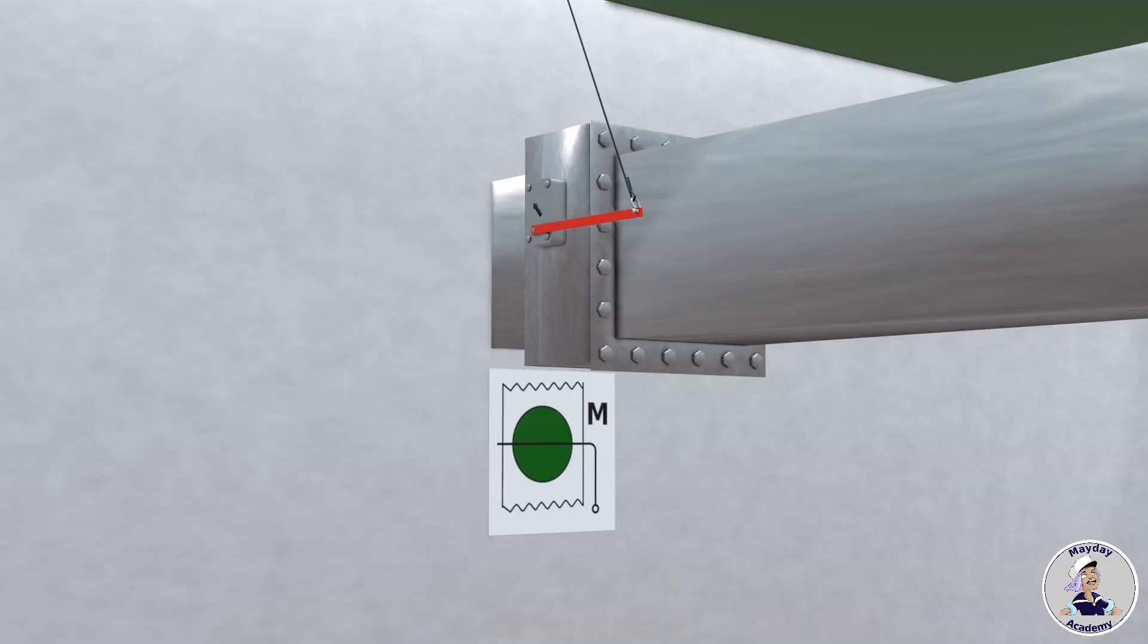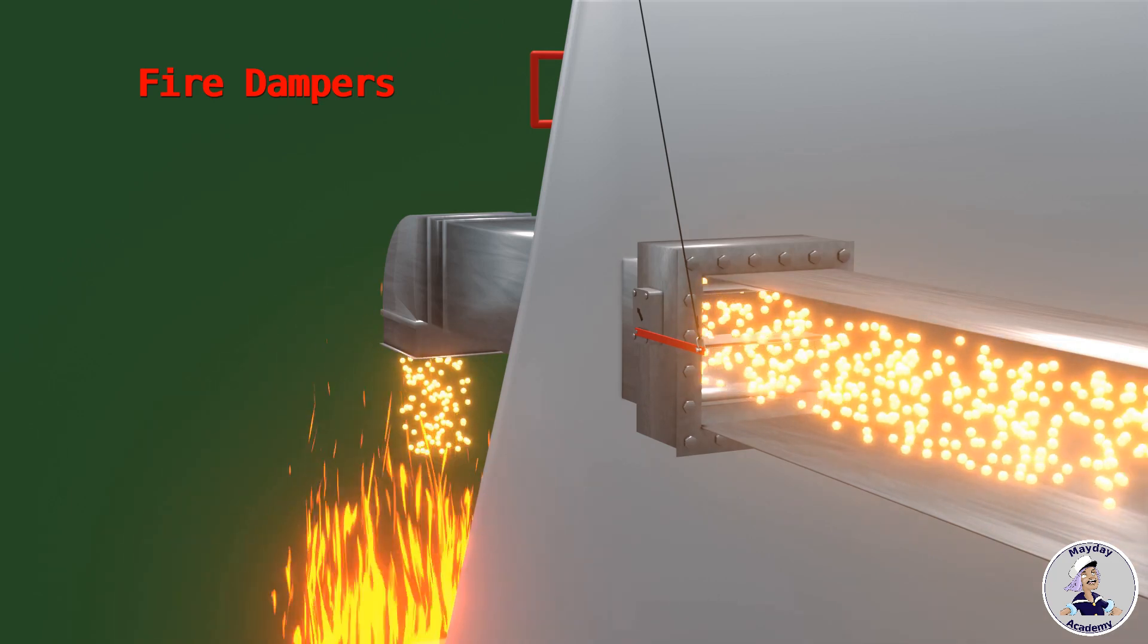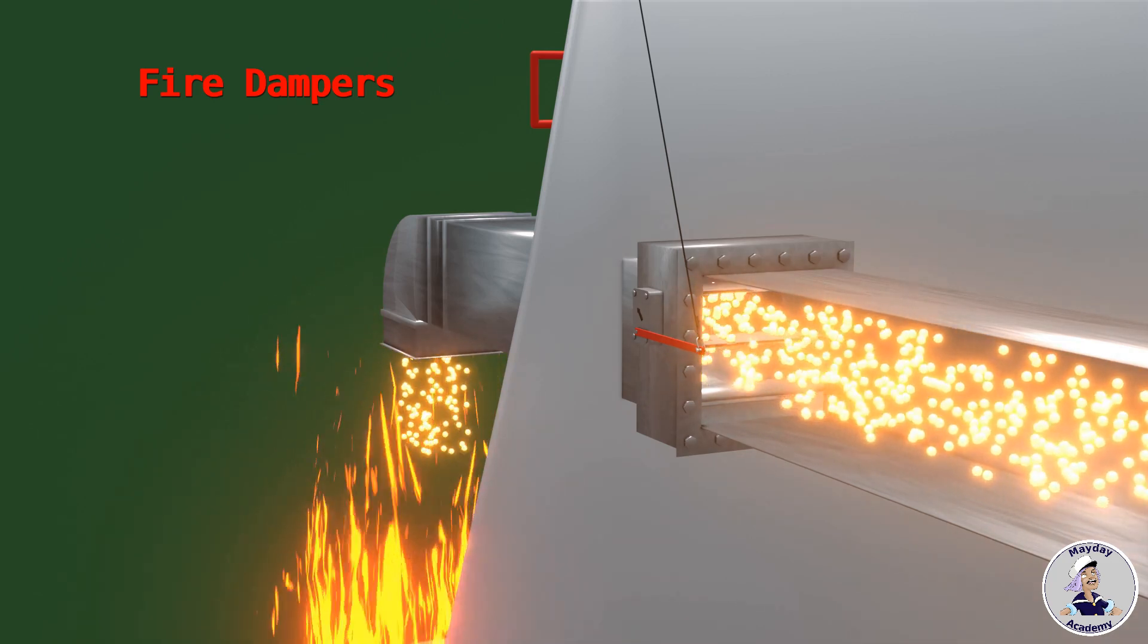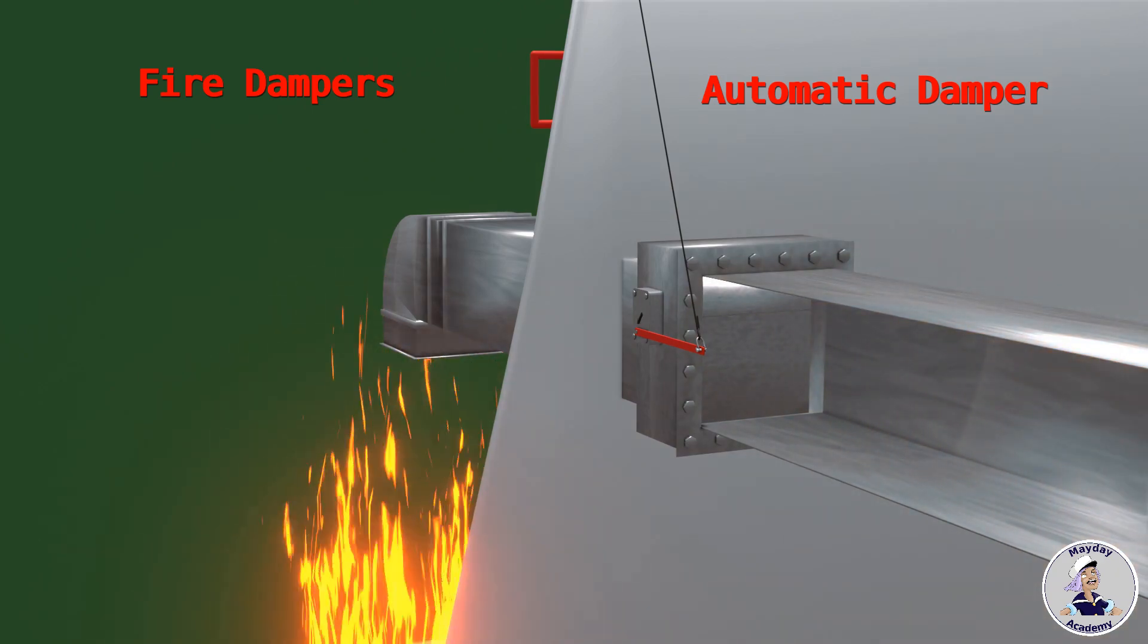Let's start with fire dampers. As per SOLAS regulations, dampers must be installed within all ventilation ducts penetrating any Class A compartment. When a fire occurs, the heat-sensitive element in the fire damper detects the rise in temperature and promptly closes the damper blades, effectively blocking the passage between compartments.